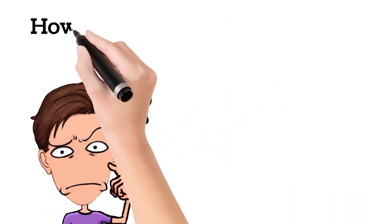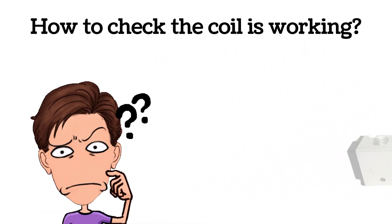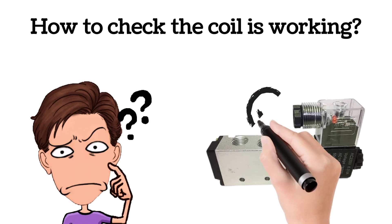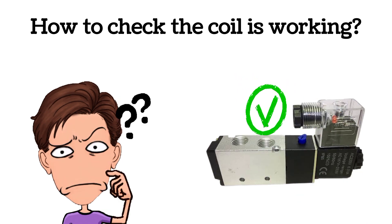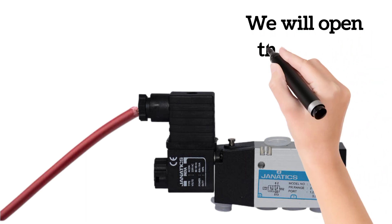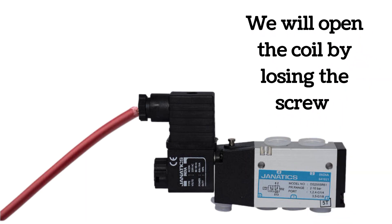Now we will see how to check that the coil is working or not. For checking SOV, we will open the coil by loosing the screw. The screw is shown by the arrow. We will loose the screw and take the coil out.